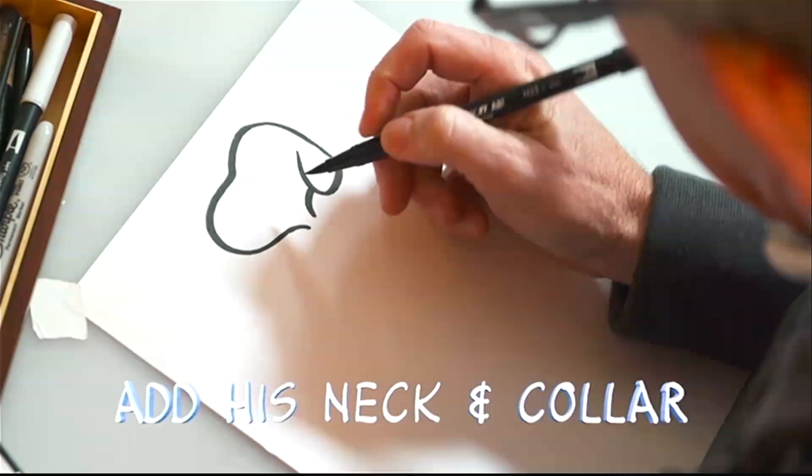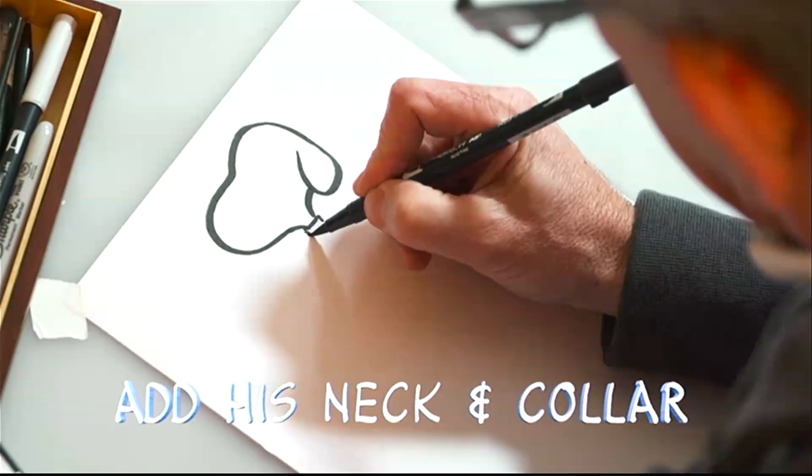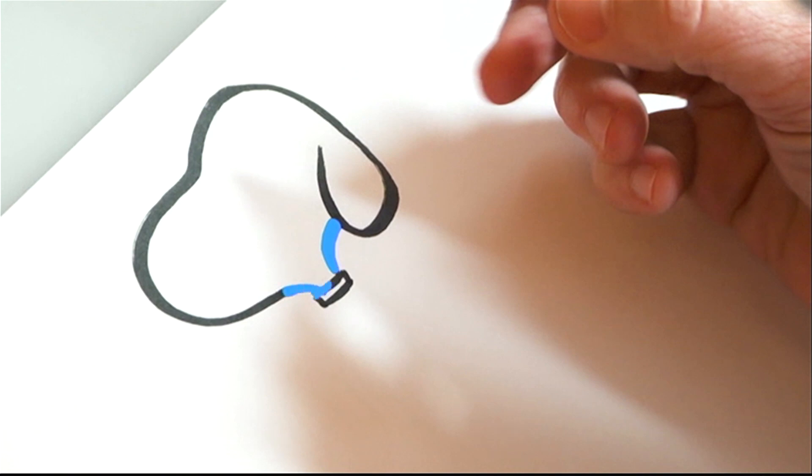He's got a tiny little neck and, of course, a collar. Draw those lines so they almost touch each other, but not completely. Snoopy's collar is shaped like a small rectangle. Pause the video to practice drawing Snoopy's head, neck, and collar. And then push play when you're ready to continue.